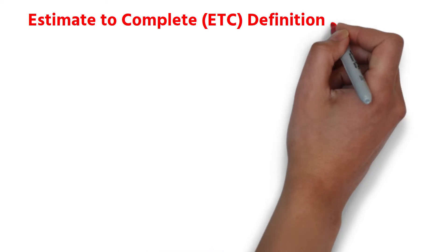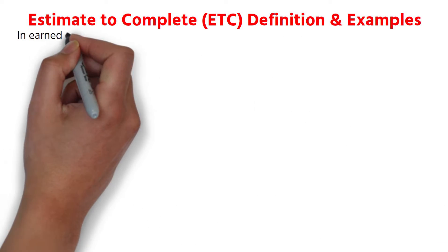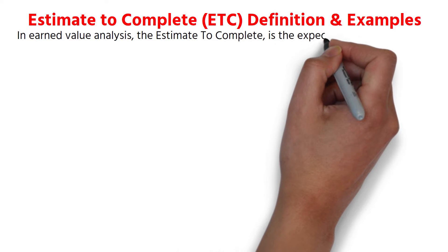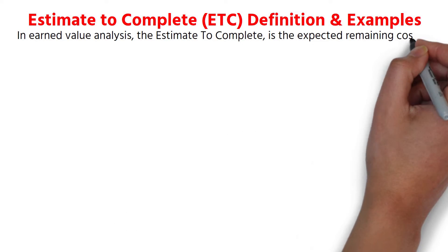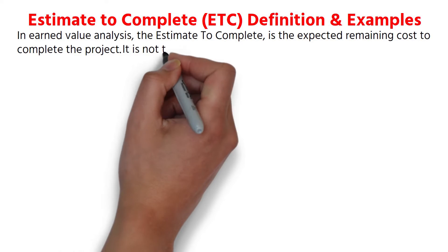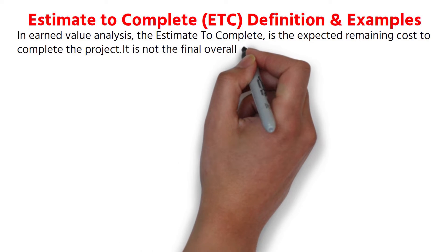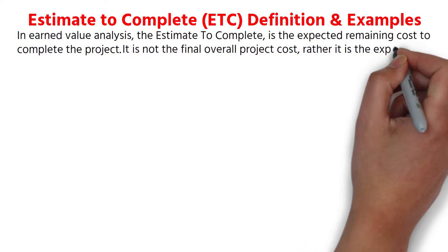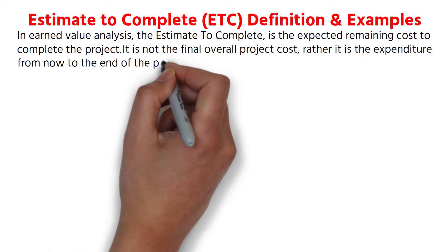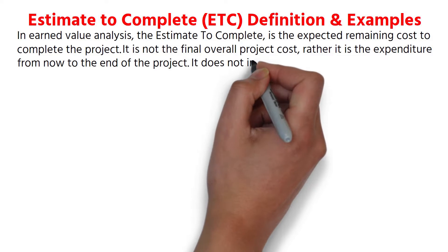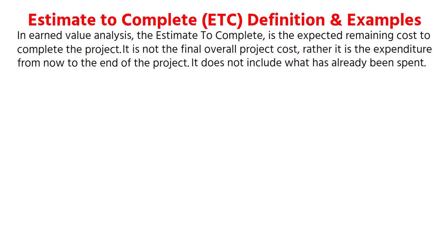Estimate to Complete: Definition and Examples. In earned value analysis, the estimate to complete is the expected remaining cost to complete the project. It is not the final overall project cost; rather, it is the expenditure from now to the end of the project. It does not include what has already been spent.